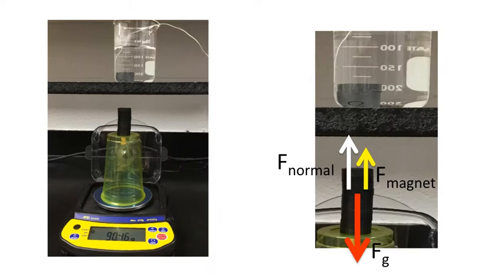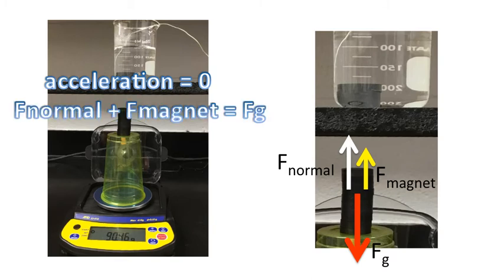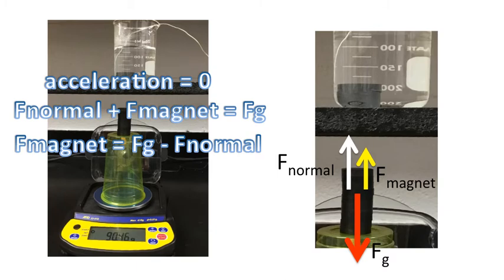So, if we look at our free body diagram, force of gravity points downwards, and normal force and the magnetic force point upwards. Magnetic force points upwards, remember, because the magnets are attracting each other. Notice the acceleration is zero. The magnets never move throughout the entire experiment. And so, we have a situation where the forces are balanced. Where all the forces acting downwards are equal to all the forces acting upwards. That's what that statement says. F normal plus F magnet equals Fg. It's telling us that. That all the forces acting down have to equal all the forces acting up.